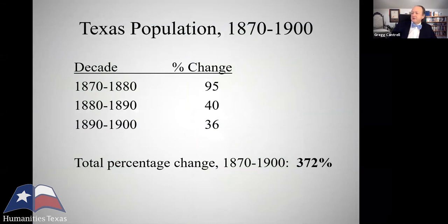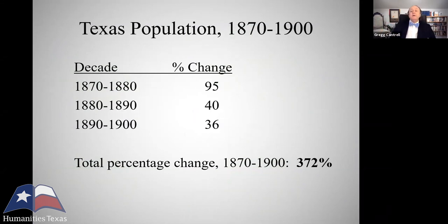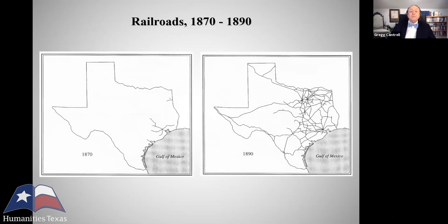Almost quadrupling in population in those 30 years. In just that one decade of the 1870s, the population grows by 95%. And overall, in the 30-year period, the percentage change is 372%. Where were all these new Texans — including my great-grandparents — coming from? Well, they were almost all coming from places further east in the South, the old lower south or the old upper south. They came on the expanding Texas network of railroads.